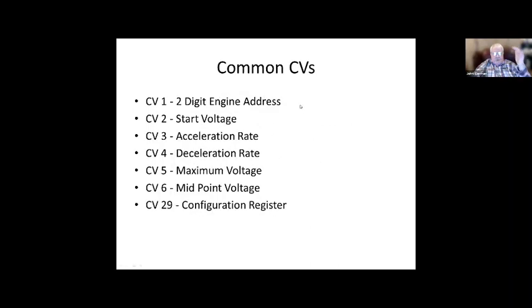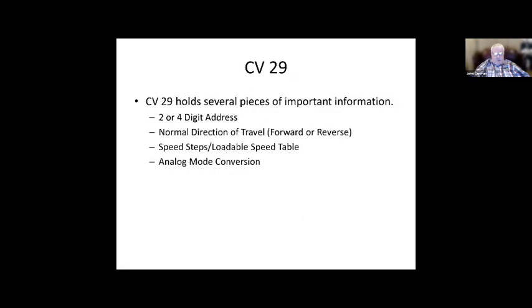Examples of CVs include engine address, start voltage, acceleration, deceleration, max voltage, and CV 29, which is a configuration register — and there are a whole lot more. CV 29 holds several pieces of information: your address, direction of travel, whether or not you're using a loadable speed table, and whether or not you're going to run in digital or analog mode. All of those are stored in that one CV.